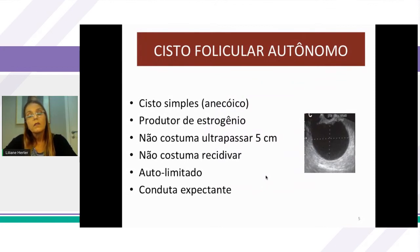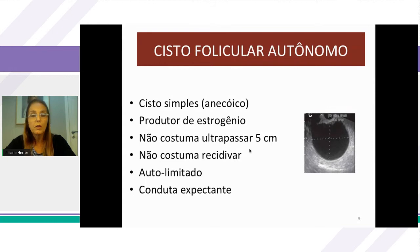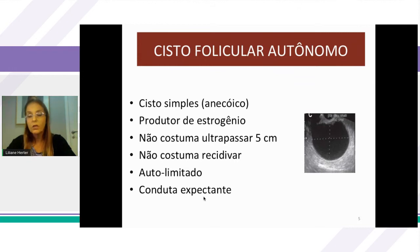Todo sangramento após o primeiro mês de vida deve ser investigado, pois não há explicação fisiológica. Algumas crianças vão apresentar estrogenização identificável pelo exame físico, e a ecografia ajuda na etiologia. Podemos encontrar um cisto folicular autônomo — imagem anecóica que produz estrogênio em altos níveis, como 800 pg/mL de estradiol sérico. Normalmente não ultrapassa 5 cm, não recidiva, é autolimitante e a conduta é expectante. Quando o quadro clínico é muito intenso, quando há manchas café com leite ou cisto recidivante, devemos pensar na síndrome de McCune-Albright.